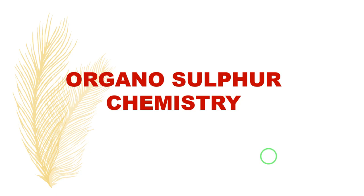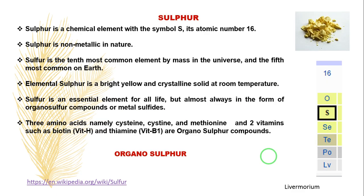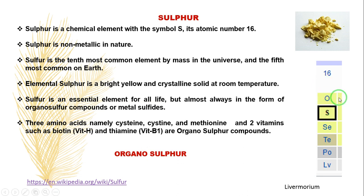Before going to the topic, let me explain you briefly about sulfur. Sulfur is generally present in the 16th group of the periodic table. This group is called the oxygen family. In this oxygen family, it consists of the elements oxygen, sulfur, selenium, tellurium, radioactive element polonium, and livermorium. So in this we are discussing about sulfur.